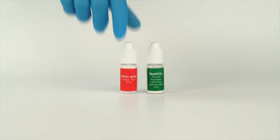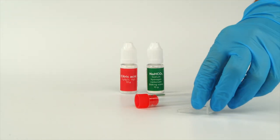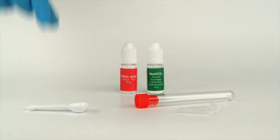For the test tube rocket experiment, you will need sodium hydrogen carbonate and citric acid. Take the plastic test tube, the small capsule, a measuring spoon, and the pipette from the experiment set.